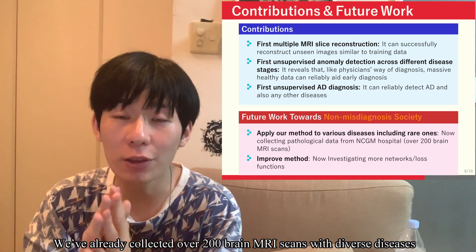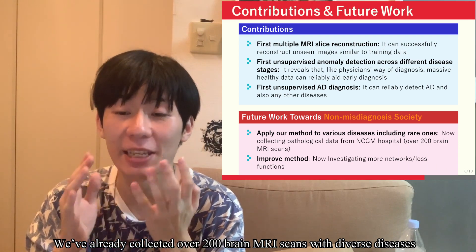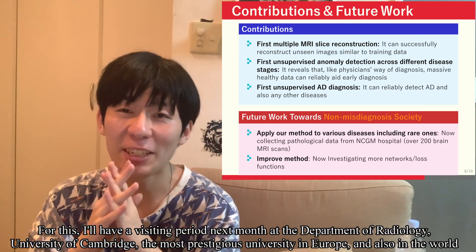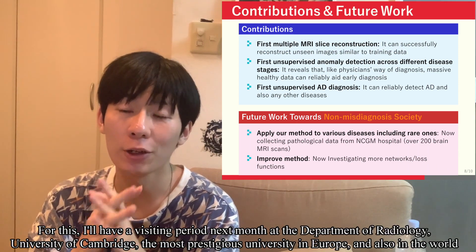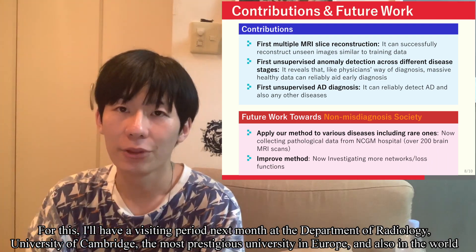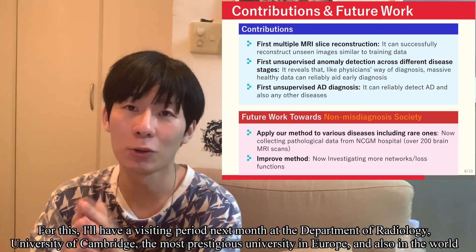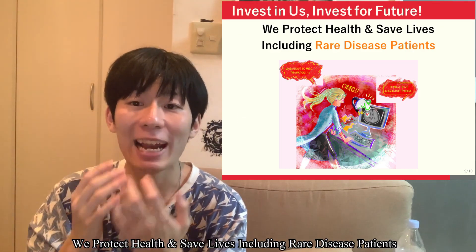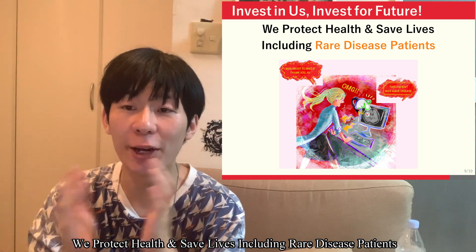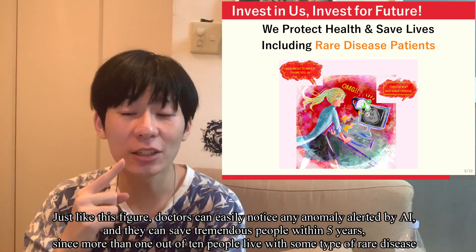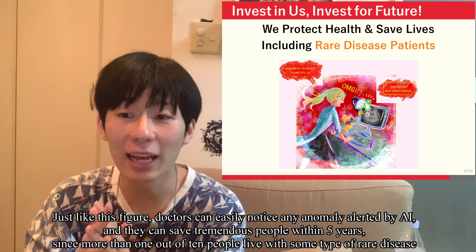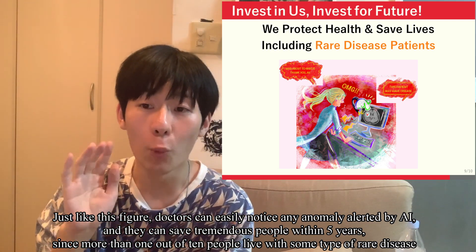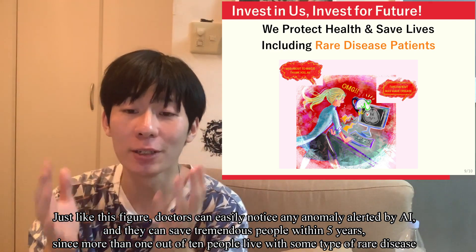We are now collecting data from NCGM hospital, and have already collected over 200 brain MRI scans with diverse diseases. We also plan to improve our methods in terms of networks and losses. For this, I will have a visiting period next month at the Department of Radiology, University of Cambridge. Doctors can easily notice any anomaly flagged by AI and can save tremendous numbers of people within five years, since more than one in ten people live with some type of rare disease.